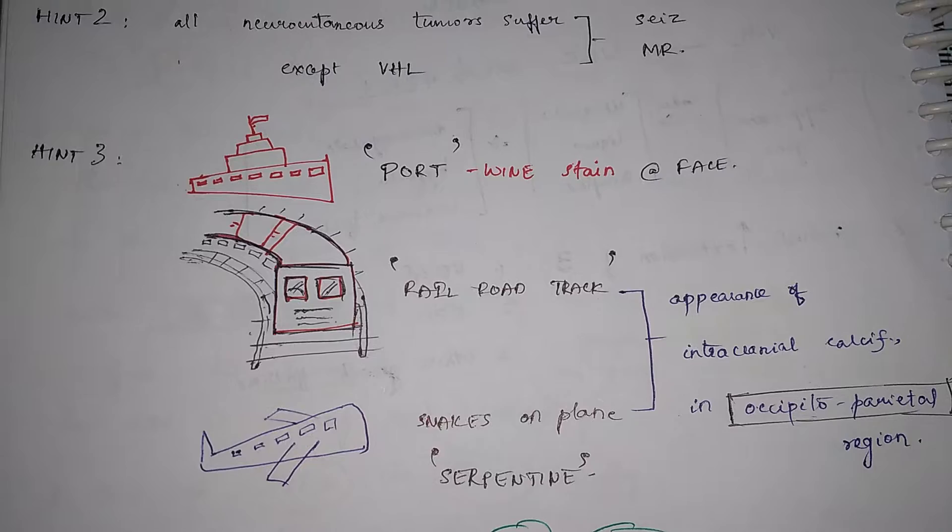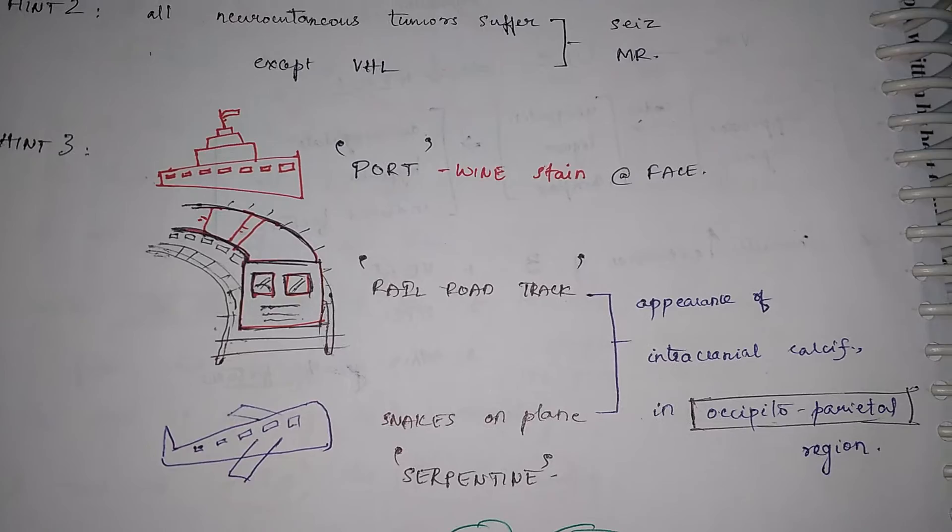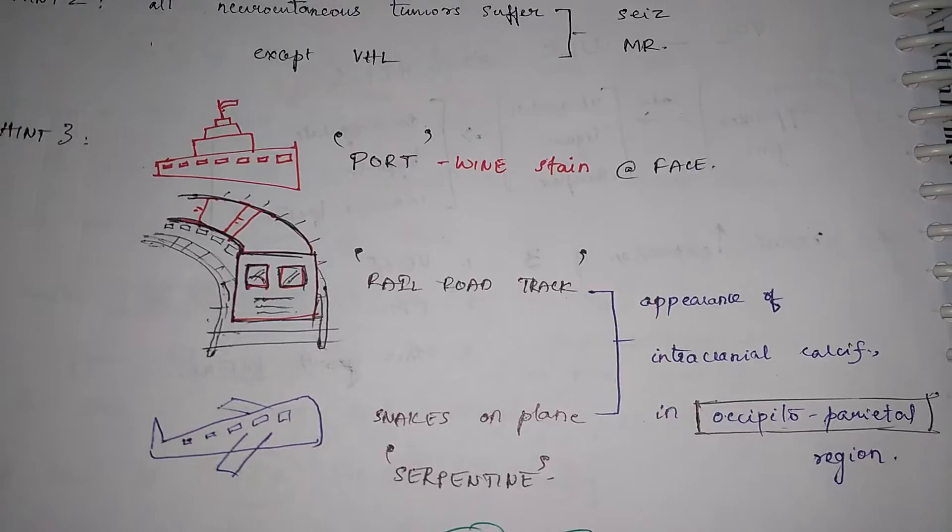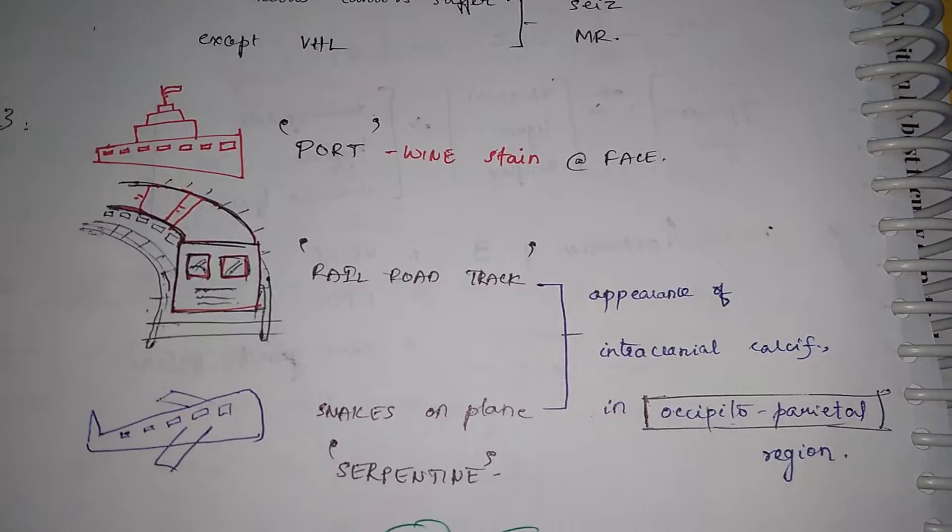So port is for port wine stain at the face railroad track and snakes on plane is a movie to remember serpentine railroad track or serpentine appearance of intracranial calcification and that intracranial you have to remember it occurs at occipital parietal region that is at the back.